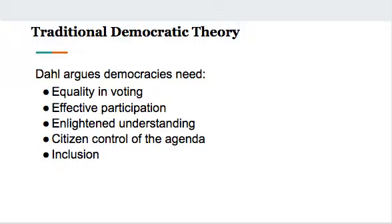Dahl talks about the need for effective participation, meaning that people in society need to be able to express their viewpoints and need to be given avenues to do that, as well as having free time in their life to do so. He also talks about the need for enlightened understanding — that the electorate, in order to be good decision makers about public policies and leaders, needs to understand the issues and have appropriate access to information.